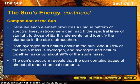Both hydrogen and helium occur in the sun. About 75% of the sun's mass is hydrogen, and hydrogen and helium together make up about 99% of the sun's mass. The sun's spectrum reveals that the sun contains traces of almost all other chemical elements.